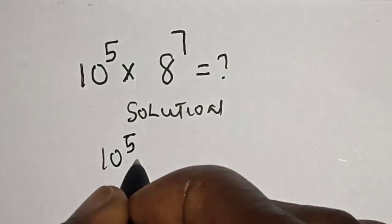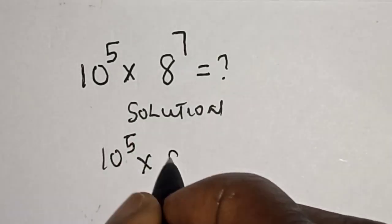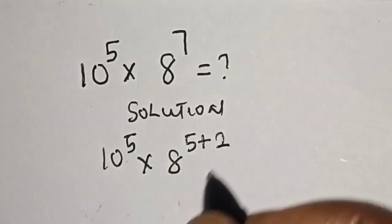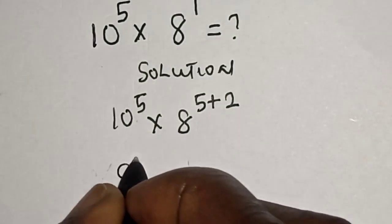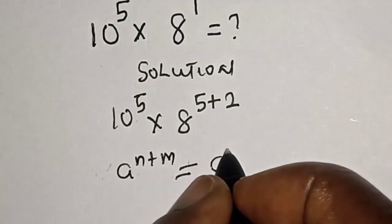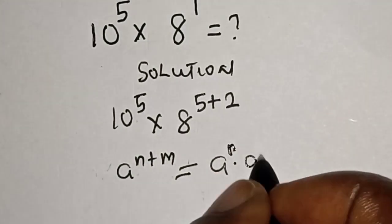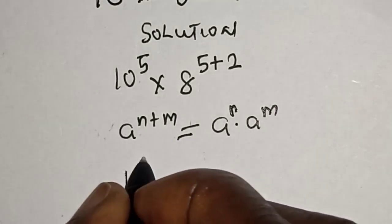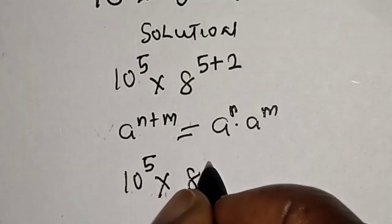This can be written as 8 raised to power 5 plus 2. Take note of this rule: a raised to power n plus m is equal to a raised to power n multiplied by a raised to power m. Then we have 10 raised to power 5 multiplied by 8 raised to power 5 multiplied by 8 raised to power 2.